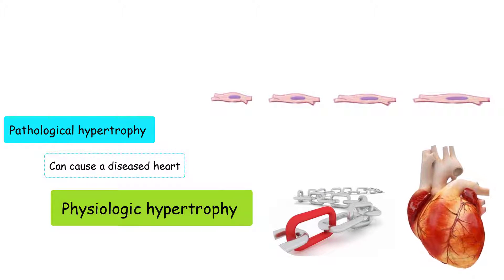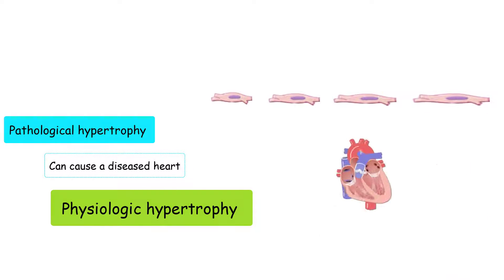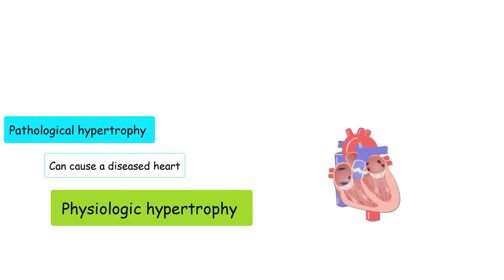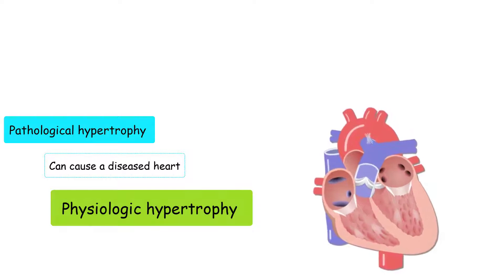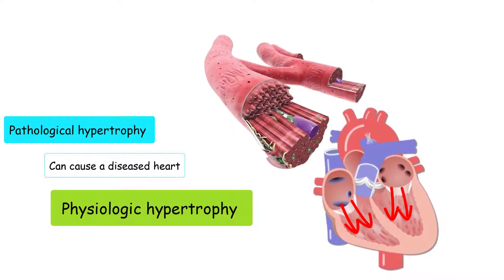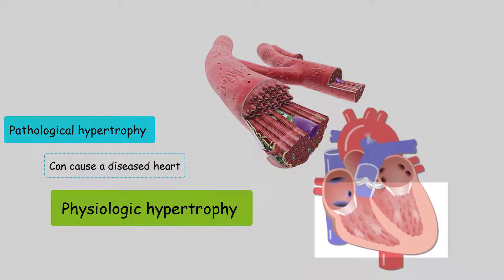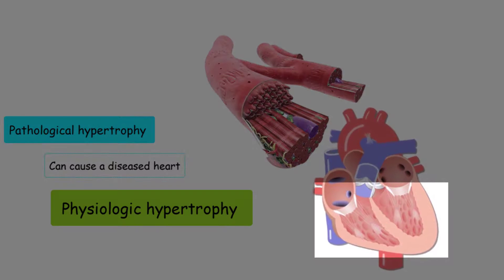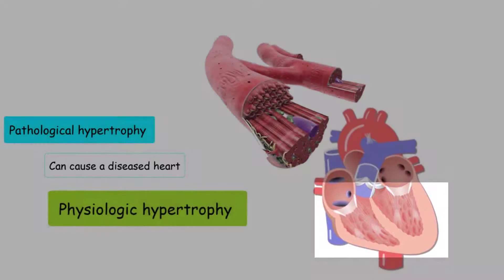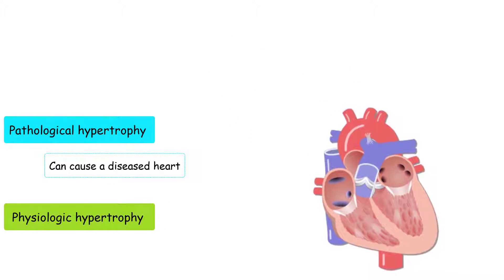By increasing the length of the myocyte, the chamber of the ventricle grows larger. The now larger ventricle is able to take in more blood than it could previously. There are also some contractile units grown in parallel, meaning the myocardium or wall of the heart becomes thicker.